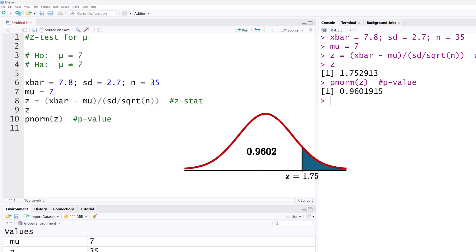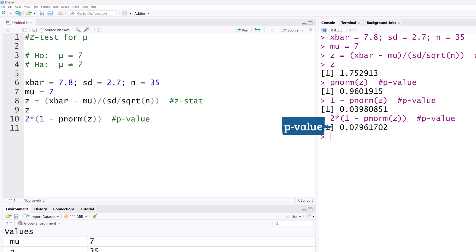However, we want the area in the right tail since the Z value is positive. That greater than area will be 1 minus this less than area. Since this is a 2 tail test, the P value will be 2 times that area in the tail, which gives 0.0796.